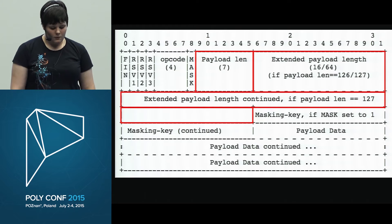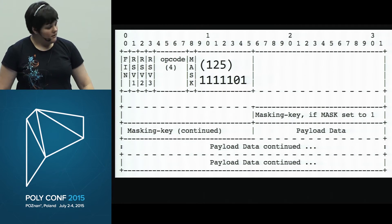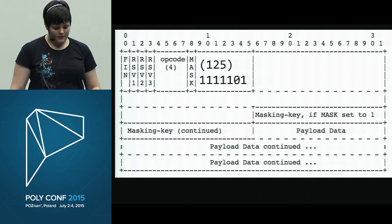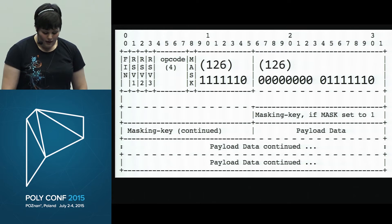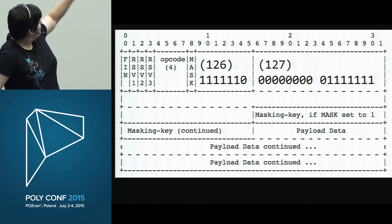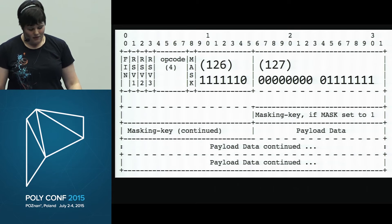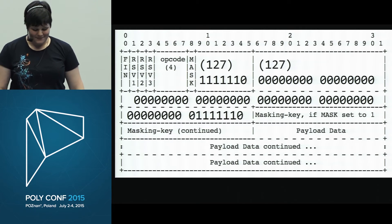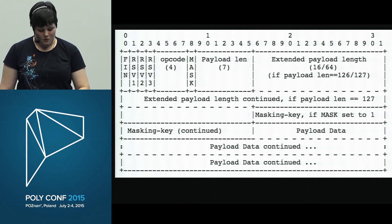Here's how the variable-length encoding works. For lengths up to 125, you put the value directly in the 7-bit field. If you want 126, you put 126 as a reserved value in the 7 bits, signaling that the next 16 bits hold the actual length. Value 127 in the 7-bit field signals that the next 64 bits hold the actual length, which allows for very large frames, though you usually don't need anything that big. After the length comes the 32-bit masking key, then the payload data.